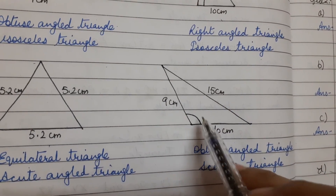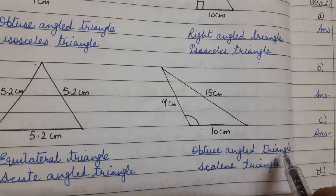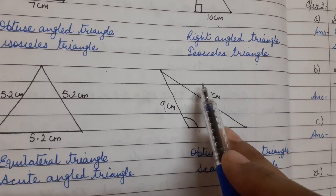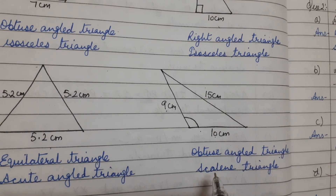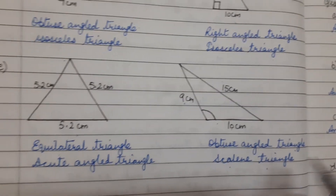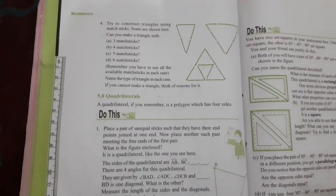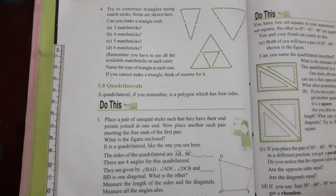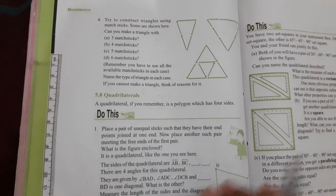For part F, one angle is obtuse — obtuse angled triangle — and all three sides are of different lengths — scalene triangle. Thank you and have a nice day. Complete exercises 5.5 and 5.6 in your notebooks.